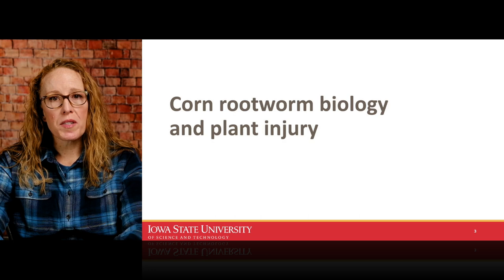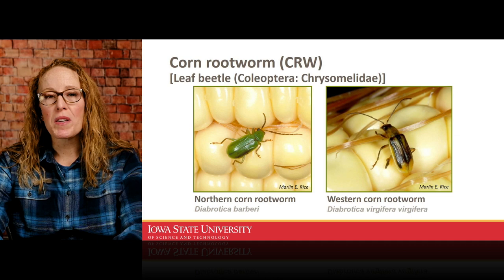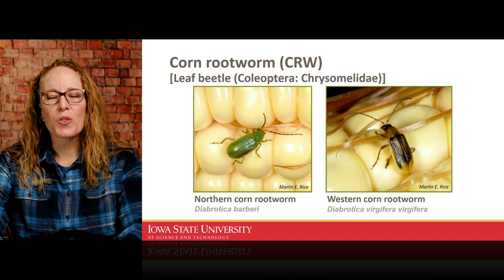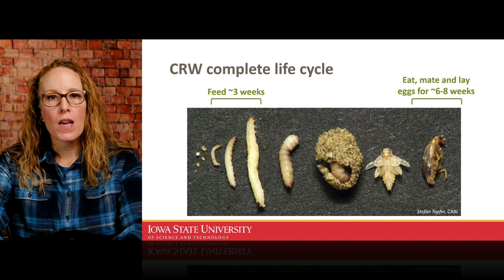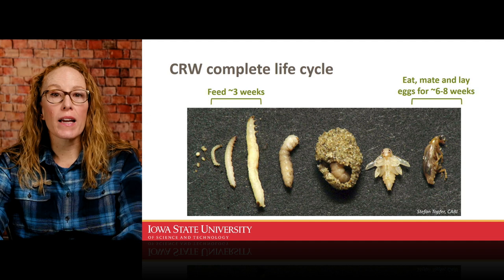Just to make sure we're on the same page, let me briefly touch on biology and plant entry. There are two species we care about in Iowa and throughout much of the Corn Belt — both in the same family of leaf beetles. The northern corn rootworm on the left is the bright lime green one, and the western corn rootworm is yellowish or brown with dark markings on the wings. Like all beetles, corn rootworm goes through a complete life cycle with four distinct life stages: egg, larva, pupa, and adult.